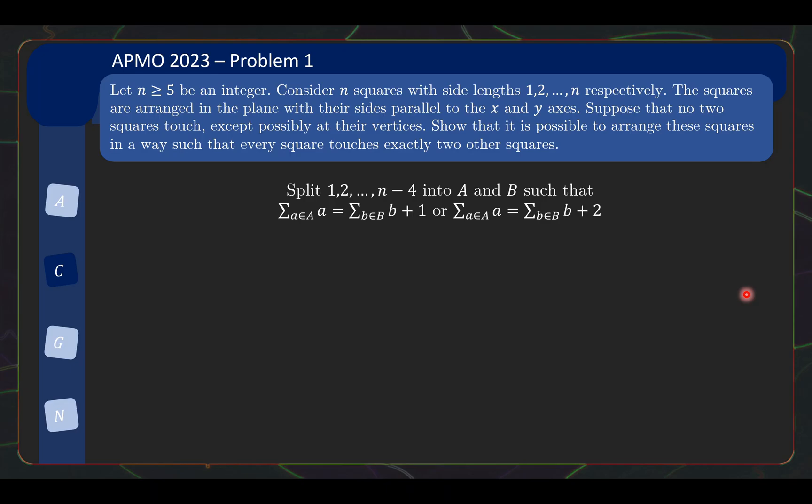So the other way I can come up with a construction is to choose the a's such that the sum of a is 1 larger than the sum of b's. So depending on whether I can come up with plus 1 or plus 2, I can put my two squares here accordingly. So I have simplified the problem into the following. Can we split 1, 2 until n minus 4 into two sets a and b such that the sum of the a's is 1 or 2 larger than the sum of b's?